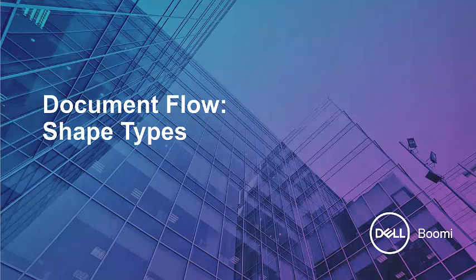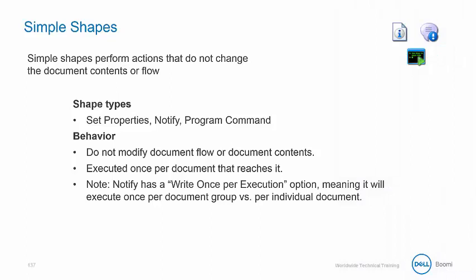In the final section of our class, we're going to review different shape types and consider how they handle documents. Simple shapes perform actions that do not change the document contents or flow. These would be set properties, notify, and program command. They don't modify document flow or the document contents and are executed once per document that reaches the shape.